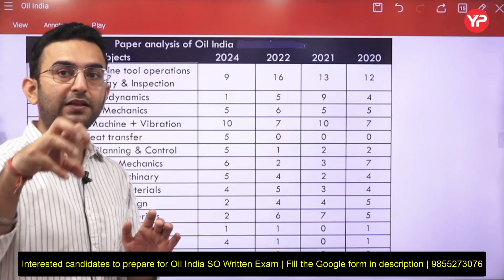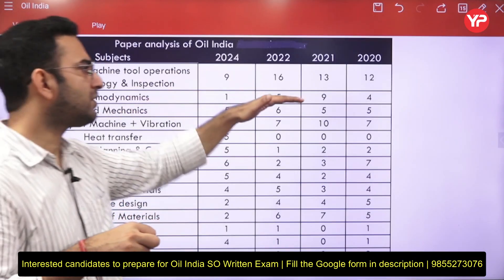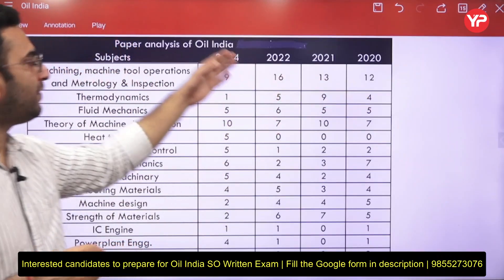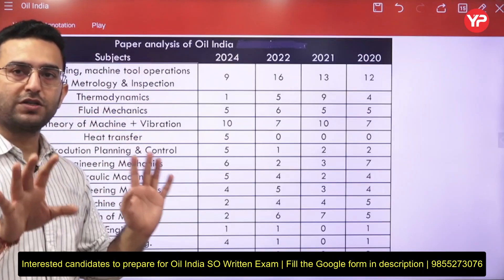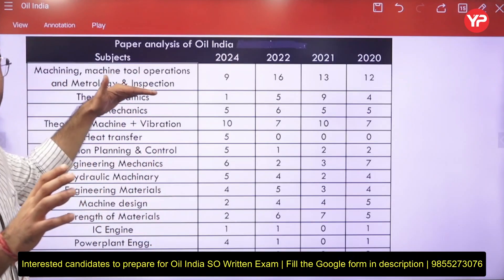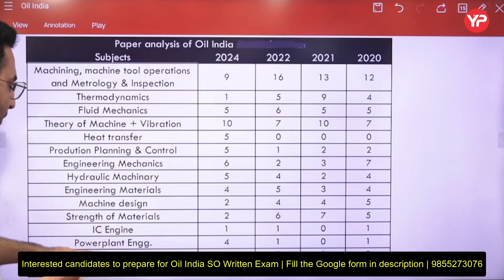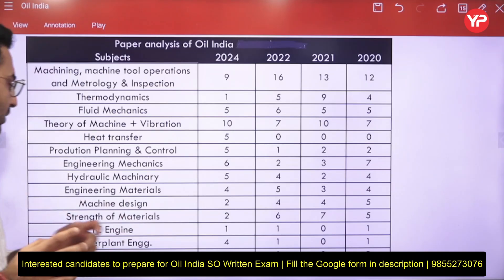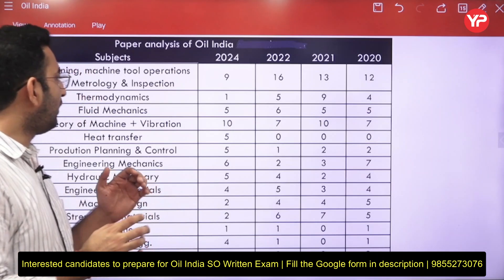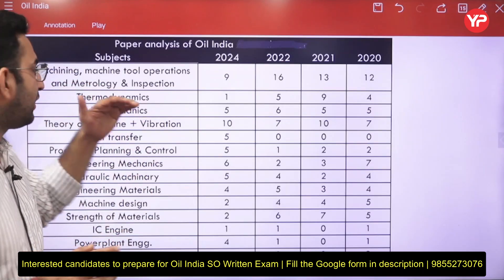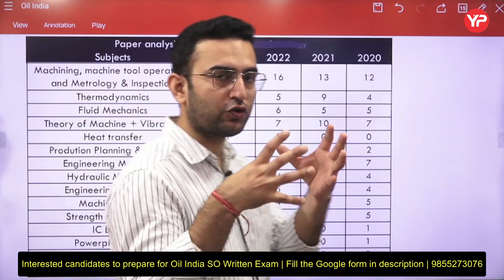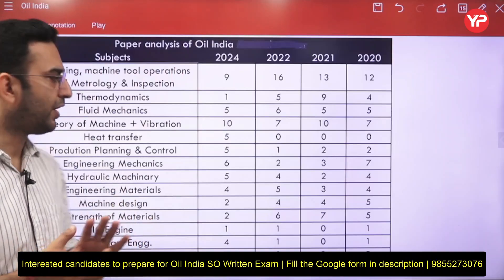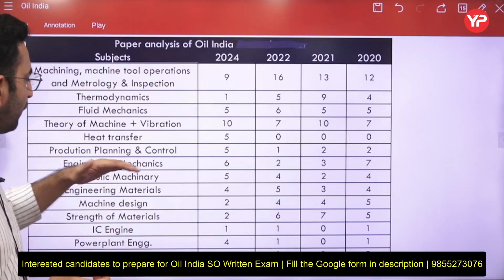For thermodynamics, including basic and applied thermodynamics, on average six to seven questions are asked, though it varies — sometimes four, sometimes nine, and in the last year only one question appeared. Do not skip thermodynamics, because covering basic thermodynamics also enables you to solve questions on IC engines, power plants, refrigeration, and air conditioning. However, don't spend too much time on it since it comprises only seven to eight questions combined. Give more focus to engineering mechanics, strength of materials, machine design, fluid mechanics, and hydraulic machines.